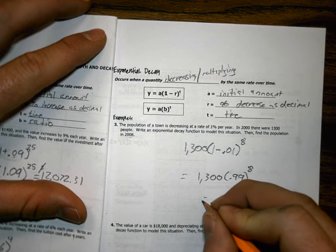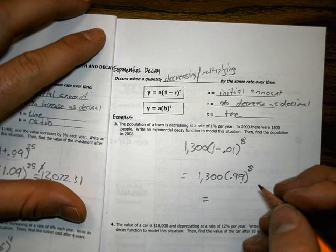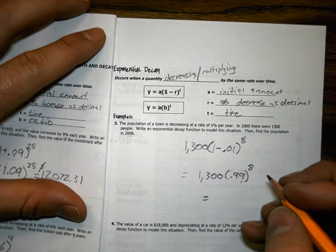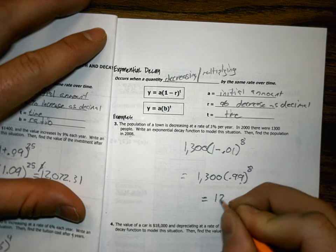If I type that into my calculator, 1,900 in. No, it's 1,299, which rounds to 1,200.